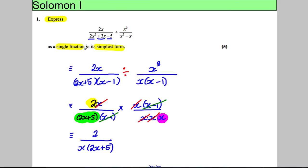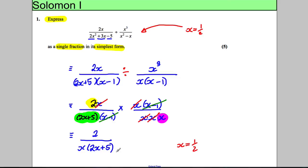Under exam pressure you might make a mistake. To check, substitute something like x = ½ into the original expression on your calculator, then substitute x = ½ into your answer. If you get the same value, you've very likely got the right answer.